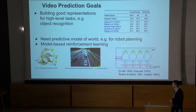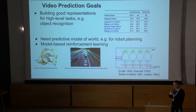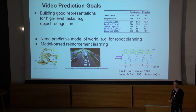Another application is to actually use the predictions themselves. You could use this model — able to predict what's going to happen in the future — for planning. You could think of the model as a little simulator of your world, roll it out into the future, and try out various potential courses of action in your environment, figuring out which might lead to high reward. With deep nets, you can also backprop through the model to optimize the sequence of actions.